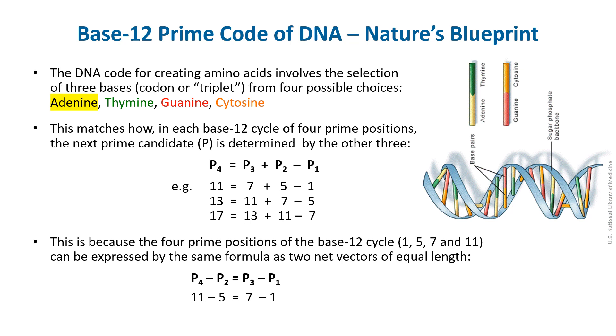This matches how, in each base-12 cycle of four prime positions, the next prime candidate, call it P4, is determined by the previous three, where P4 equals P3 plus P2 minus P1. For example, prime number 11 equals 7 plus 5 minus 1, just as 13 equals 11 plus 7 minus 5, or 17 equals 13 plus 11 minus 7.